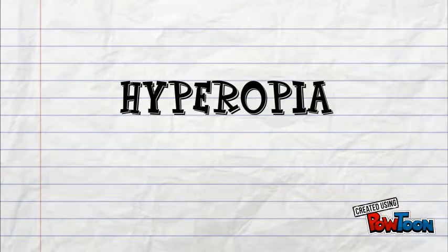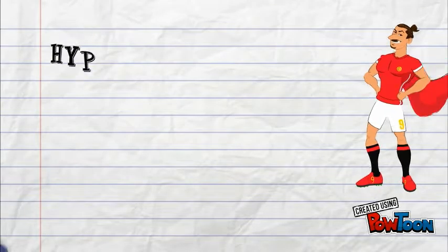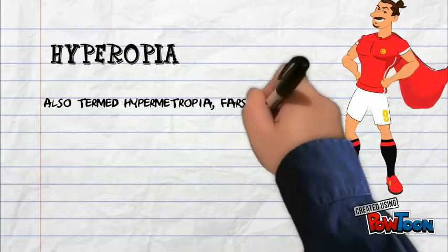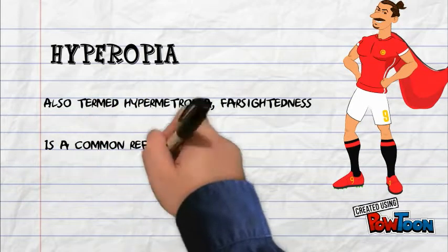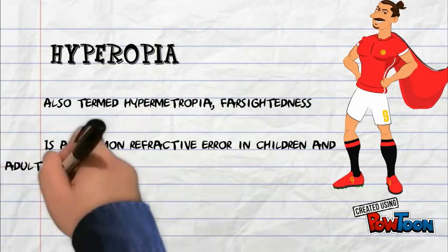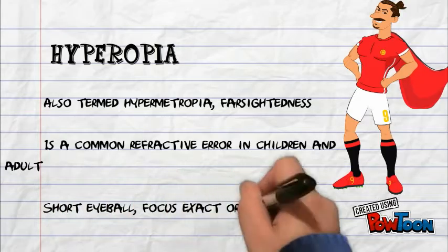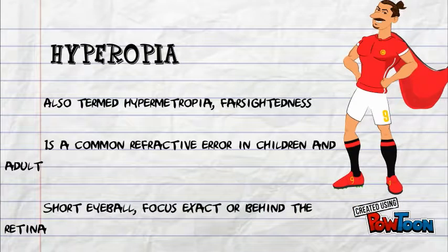The next refractive condition is hyperopia, also known as farsightedness or sometimes called hypermetropia. It is a common refractive error in children. The eyeball is short, and the focus is at or behind the retina. There is also a classification system for hyperopia.